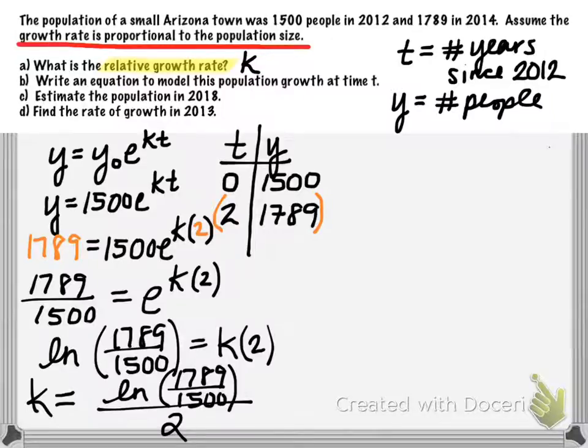In this case, and I recommend that you pause the video and go ahead and do the calculation in your calculator to make sure you're not making any sort of keystroke mistakes. But we should get approximately 0.088. And this is a positive value, so that makes sense, because the population is growing. We should have a positive relative growth rate.